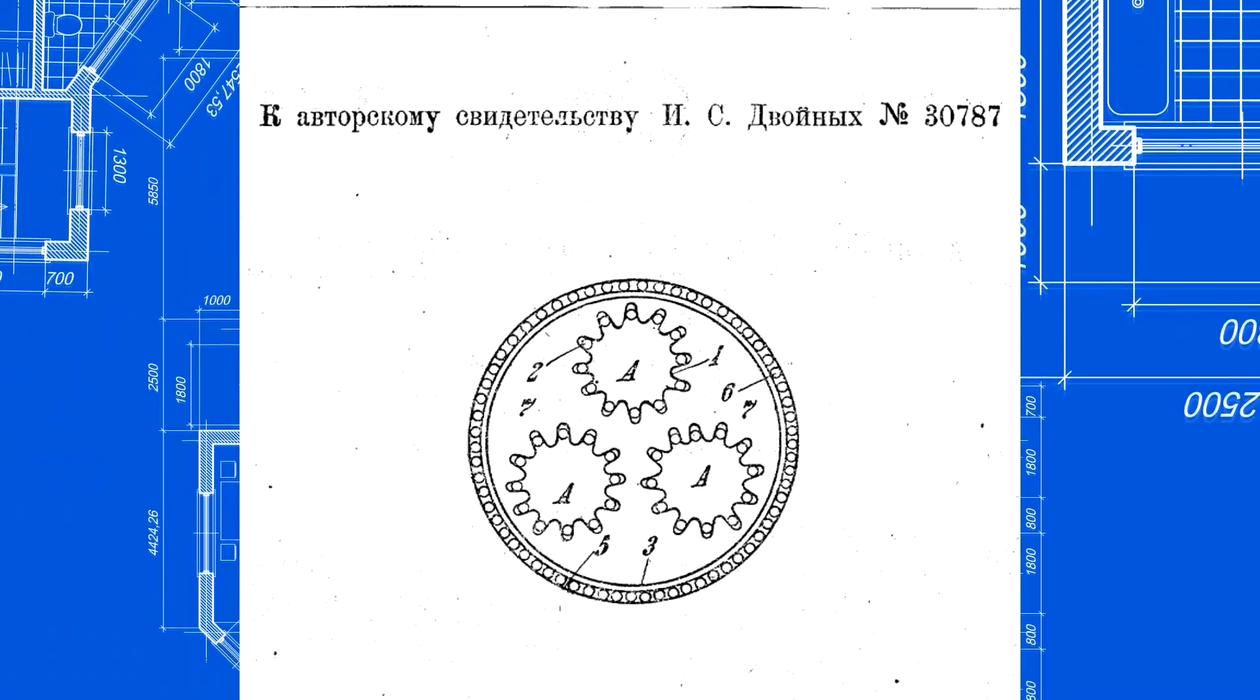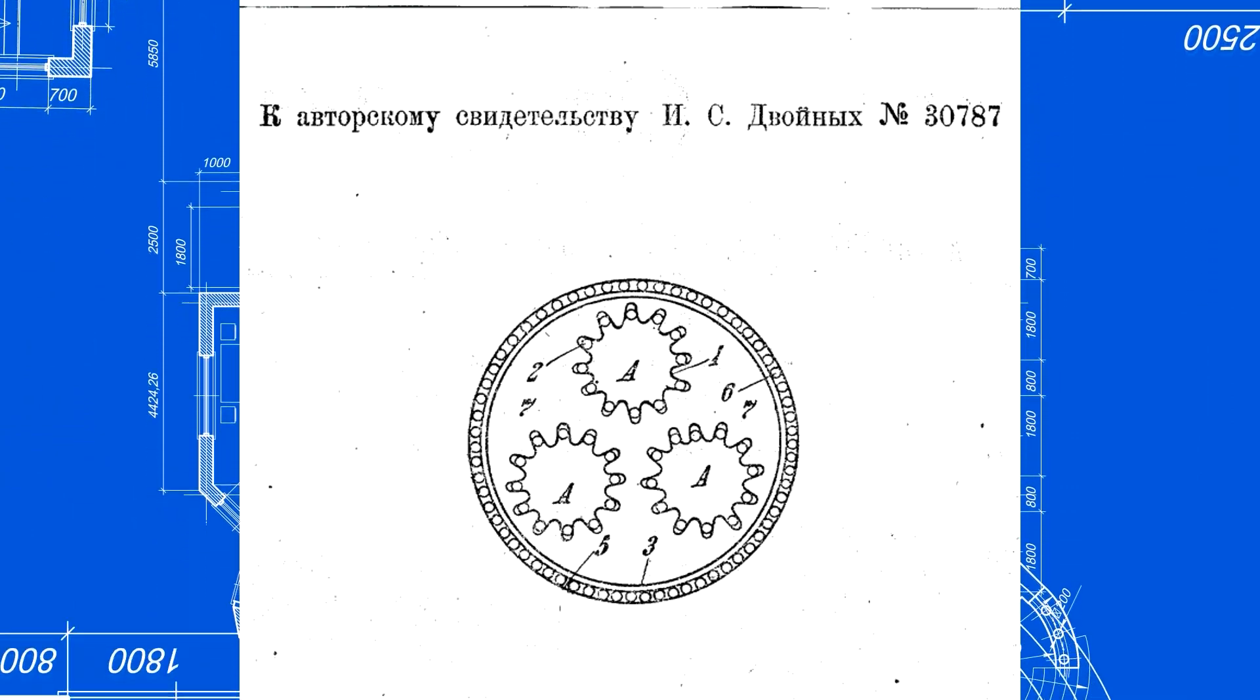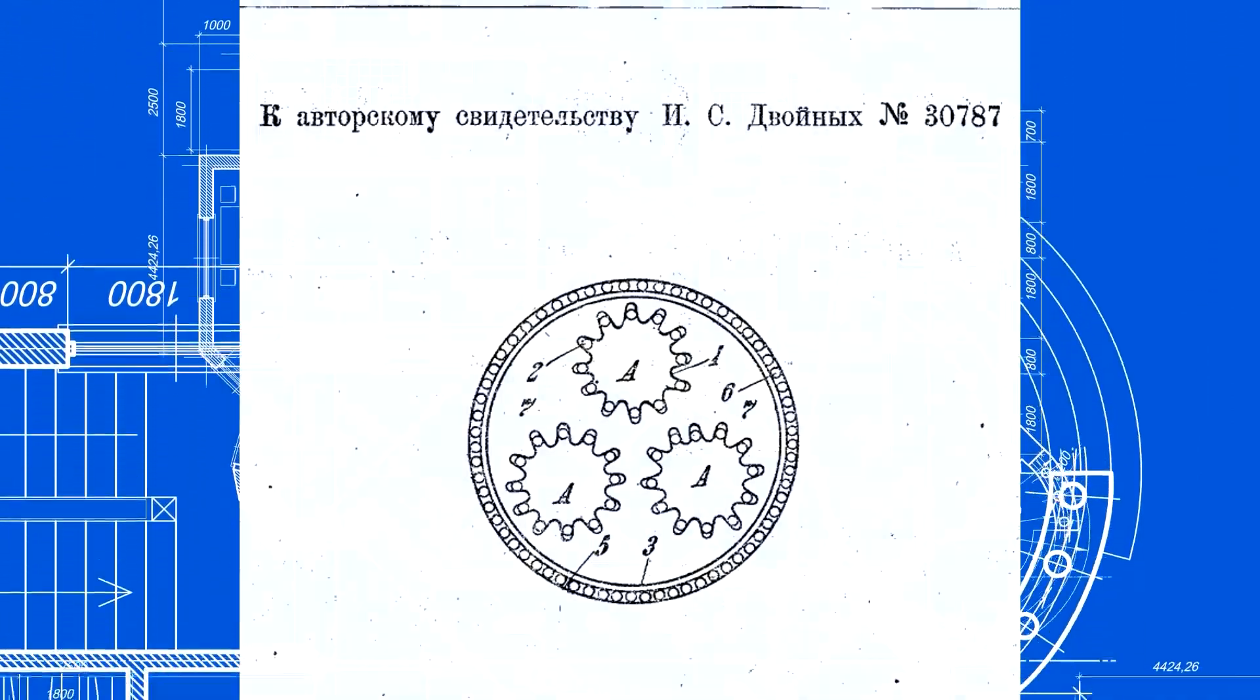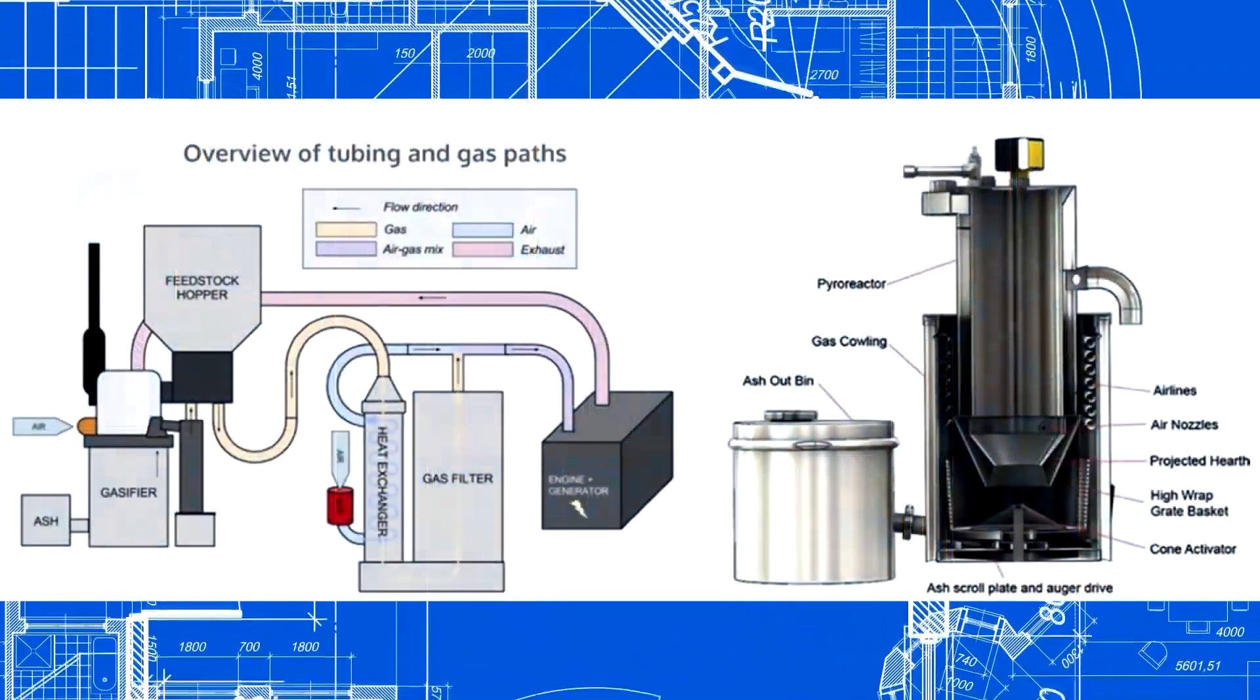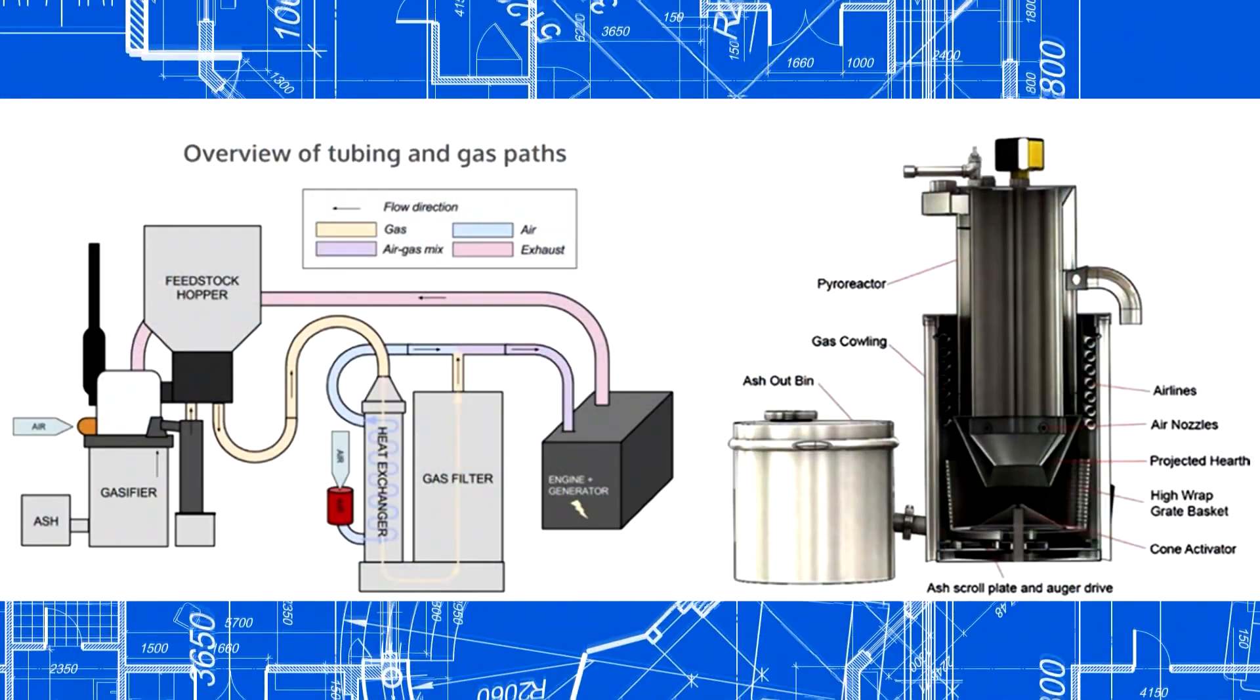Engine exhaust should be forwarded to these pipes to heat the upper wood layer where already cold generator gas reaches. All Power Labs also heats wood with exhaust at the top of the hopper.